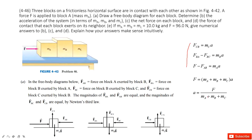The third problem asks for the net force on each object. This is straightforward because we know the acceleration and we know the mass for each object. The net force for each object is simply mass times acceleration. So we take the mass of each object and multiply by the same acceleration to get their net force.